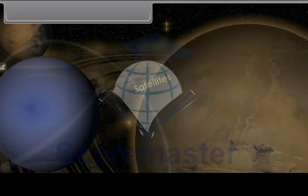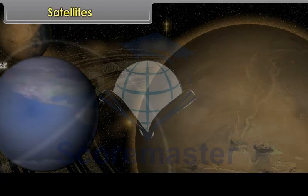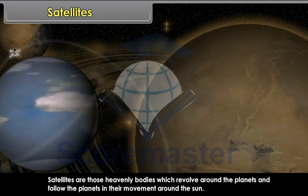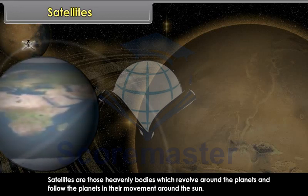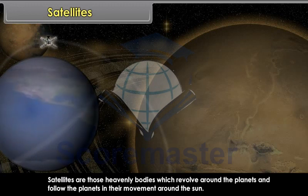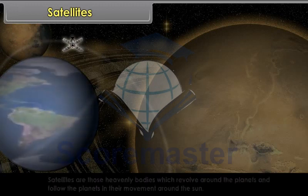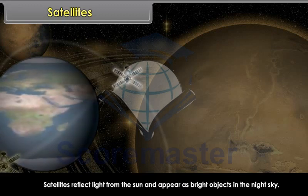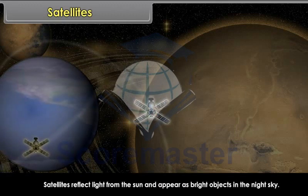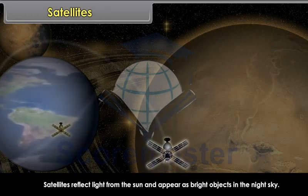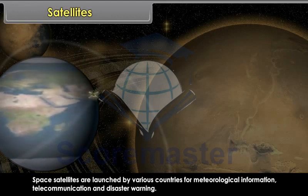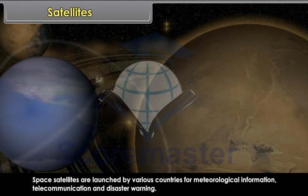Satellites. Satellites are those heavenly bodies which revolve around the planets and follow the planets in their movement around the Sun. They have no heat and light. Satellites reflect light from the Sun and appear as bright objects in the night sky. Space satellites are launched by various countries for meteorological information, telecommunication and disaster warning.